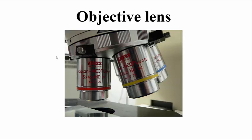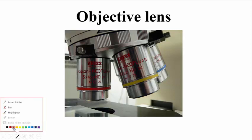Hello friends, in the basics of microbiology playlist, we have seen about wavelength of light, how magnification is done, and what is the overall structure of the microscope. Now, in the microscope there are some important components which are called lenses — we will discuss about them.